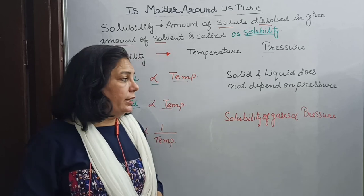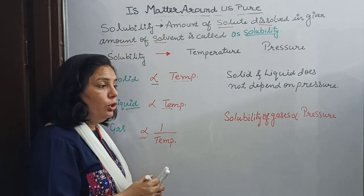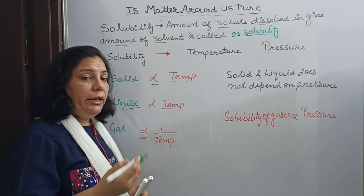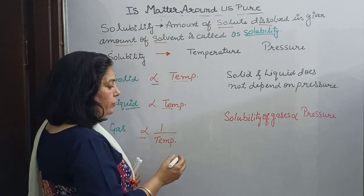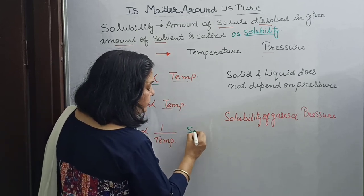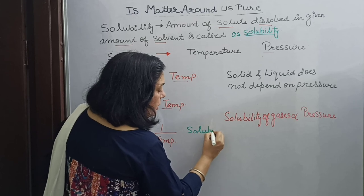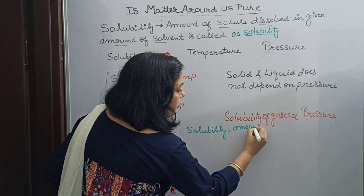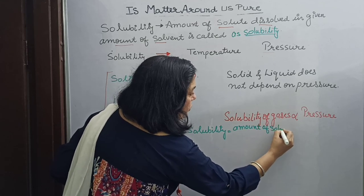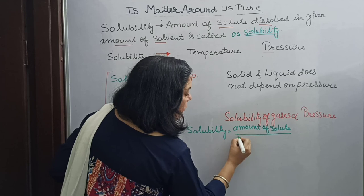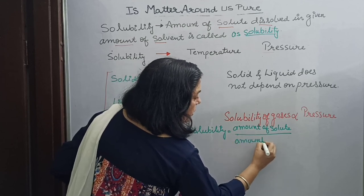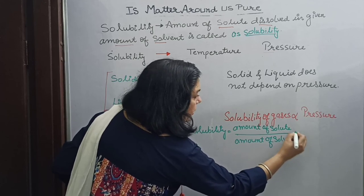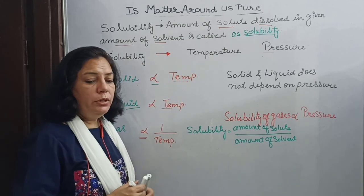There is one formula to calculate the solubility of any solute, whether it is in solid, liquid, or gaseous form. Solubility equals the amount of solute divided by the amount of solvent at a given temperature.